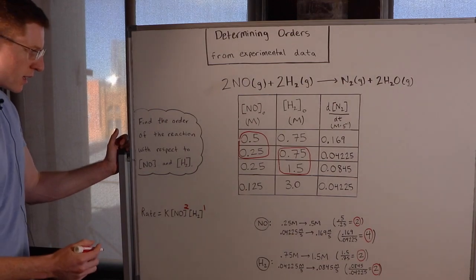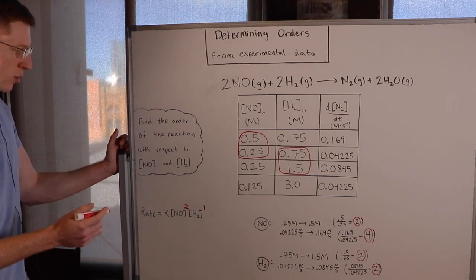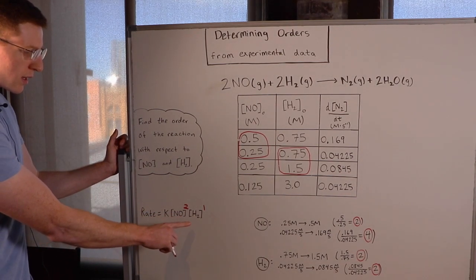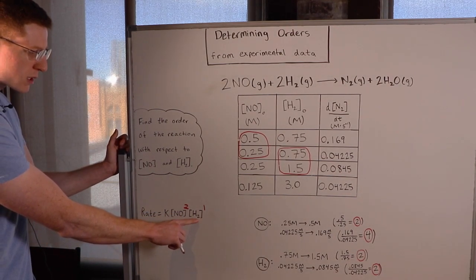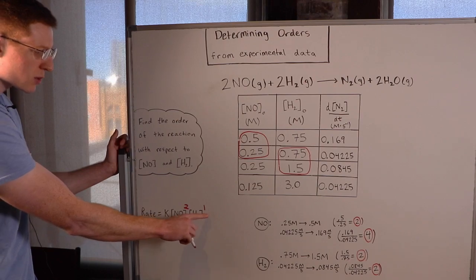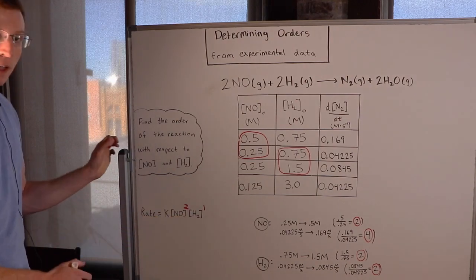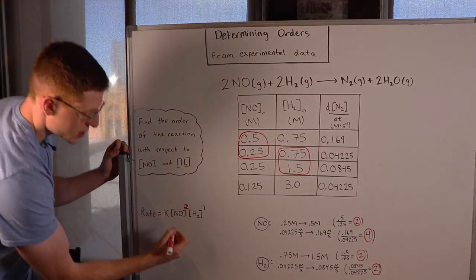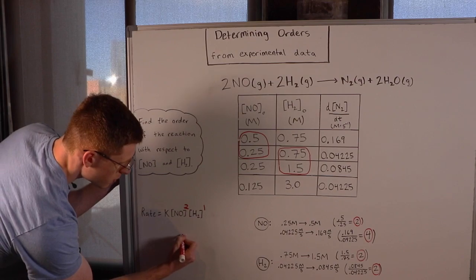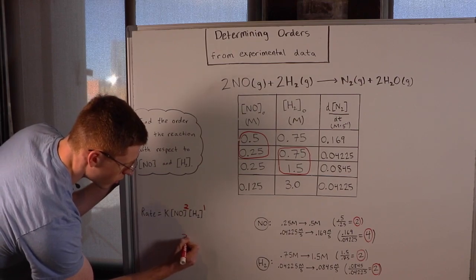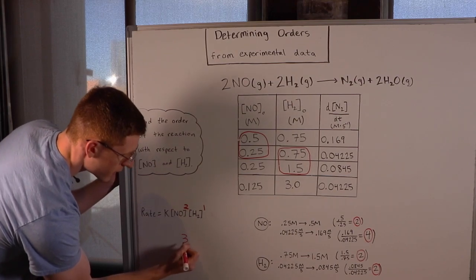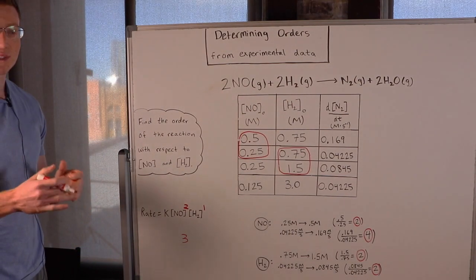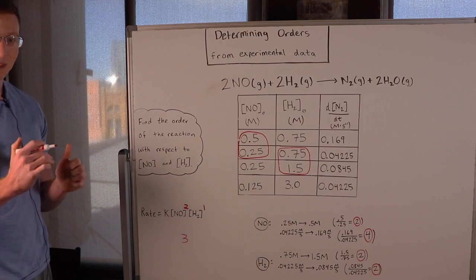So the order of the reaction with respect to NO is 2, and the order of the reaction with respect to H2 is 1. We can also say that the overall order of the reaction is 2 plus 1, or 3. I hope this video helped — if it did, please give it a thumbs up.